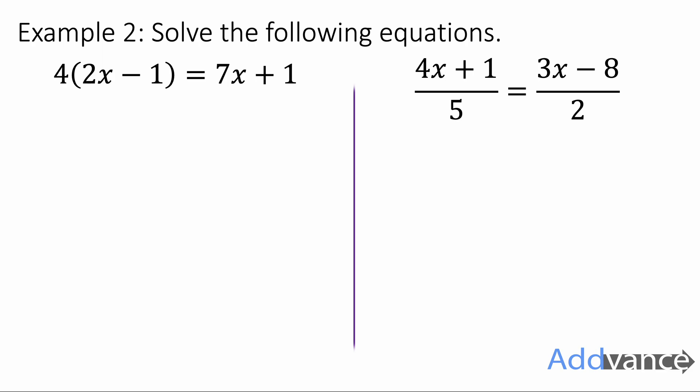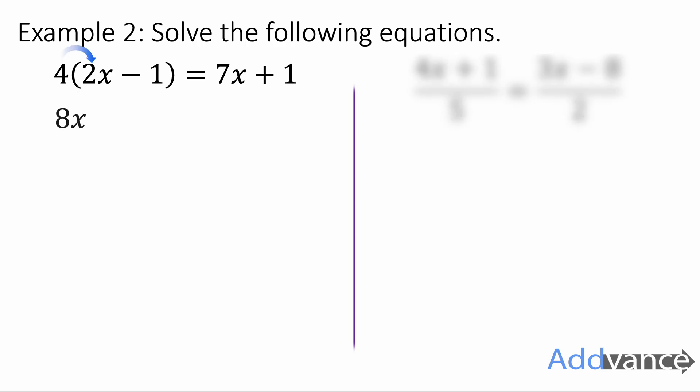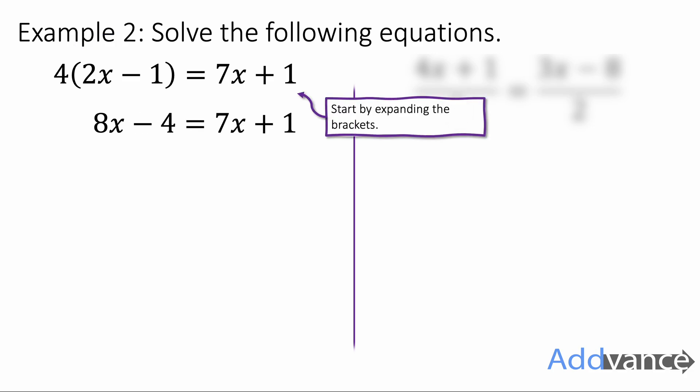These are getting a bit trickier now. We'll start with 4 times (2x minus 1) equals 7x plus 1, and to start we're going to expand the brackets by multiplying the 4 by everything in the bracket. 4 times 2x is 8x, and 4 times minus 1 is minus 4, and this is still equal to 7x plus 1. Expanding the brackets on the left hand side hasn't changed the right hand side.